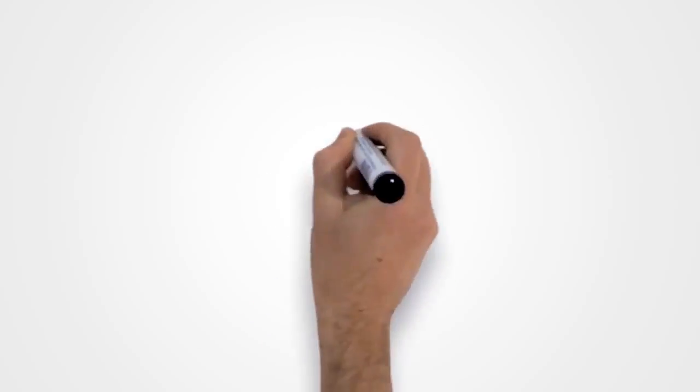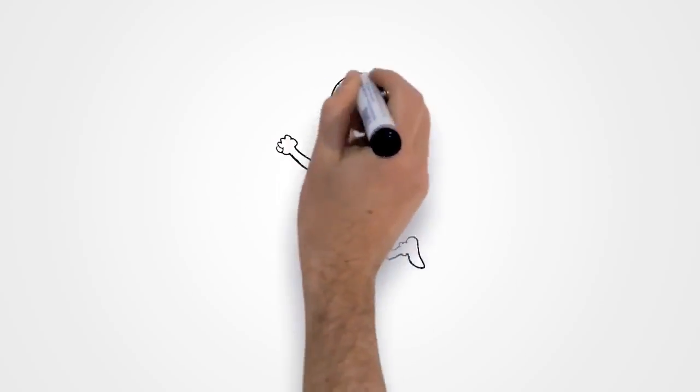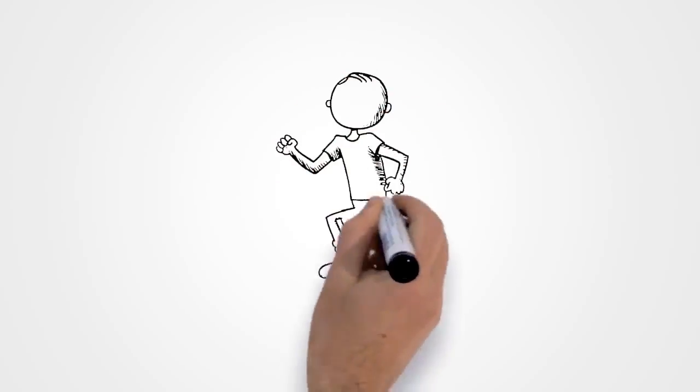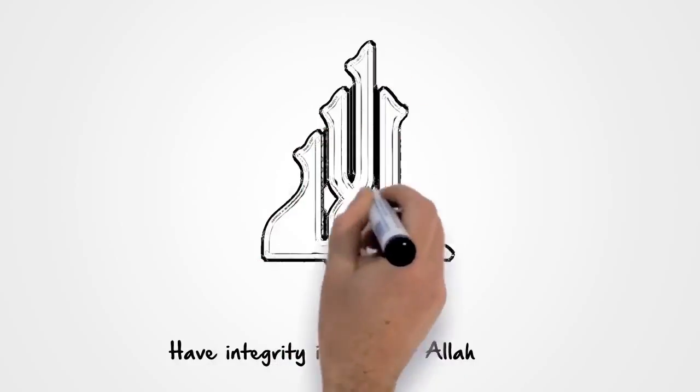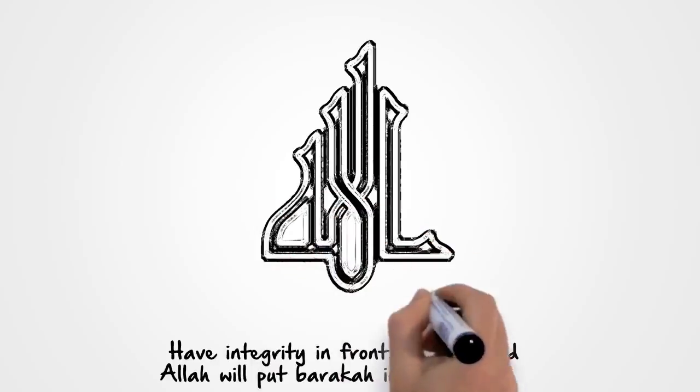Tip seven: Follow through. When it comes to Tuesday morning and you see exercise in your schedule, do it. Don't make excuses for yourself. Have integrity in front of Allah and Allah will put barakah in your actions.